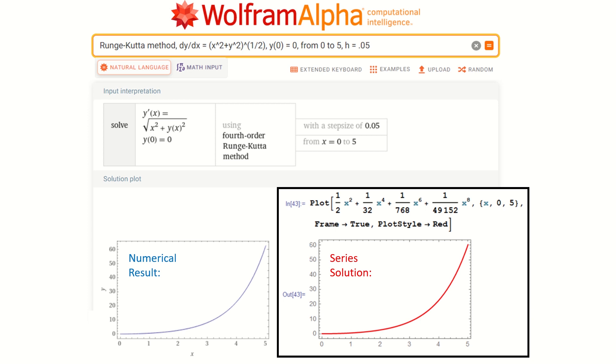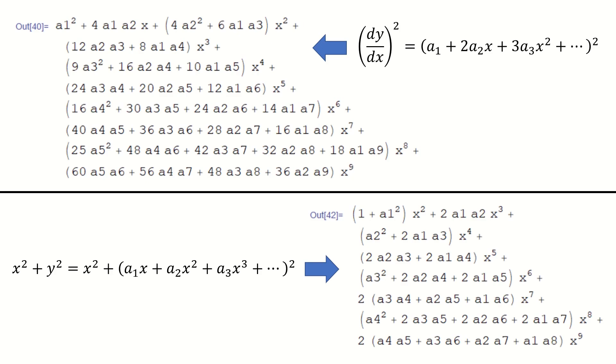So that's why I truncate this polynomial at power 8, because the series solution is converging very fast. In this last slide, I put those expansion coefficients here so you can compare them. And that's all for today.